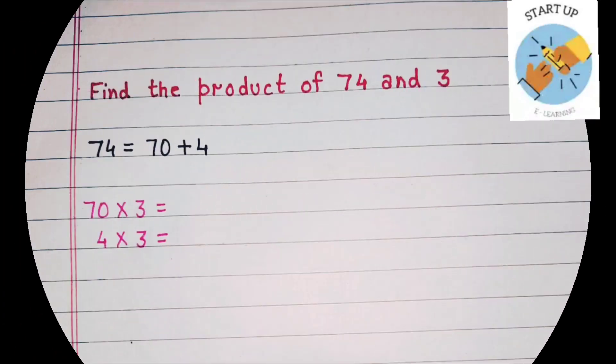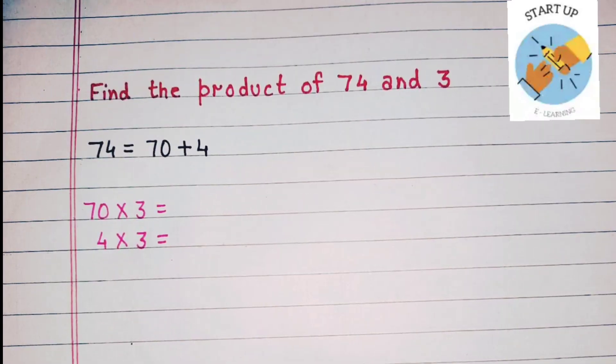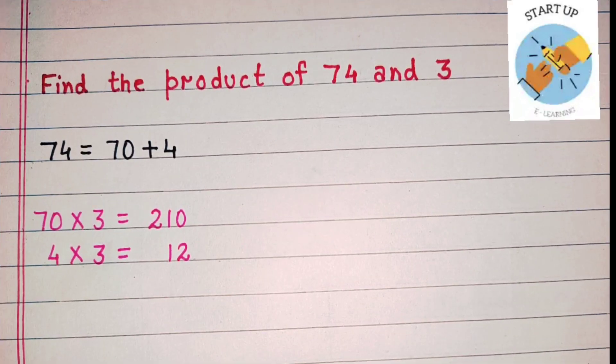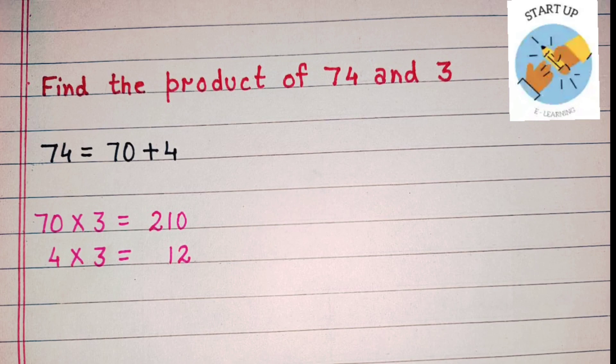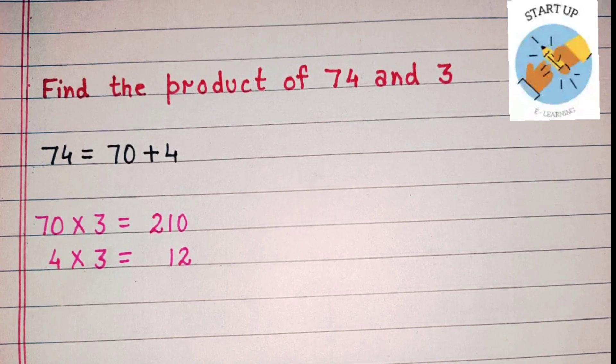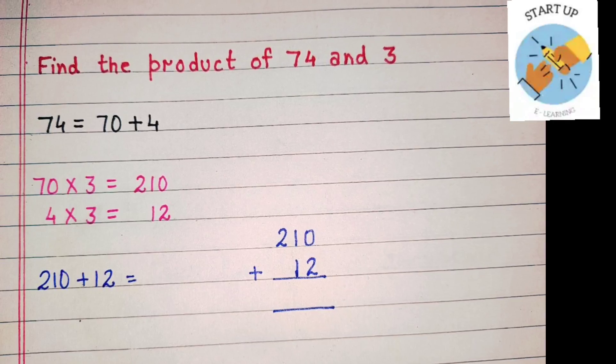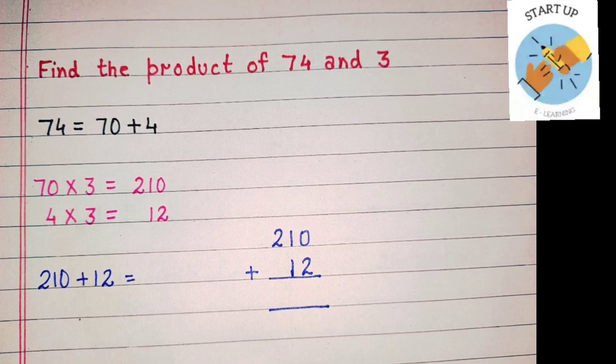70 and 4 will be multiplied by 3 separately. 70 multiplied by 3 is equal to 210. 4 multiplied by 3 is equal to 12. Now, we are going to add these two partial products to get the final product: 210 plus 12.